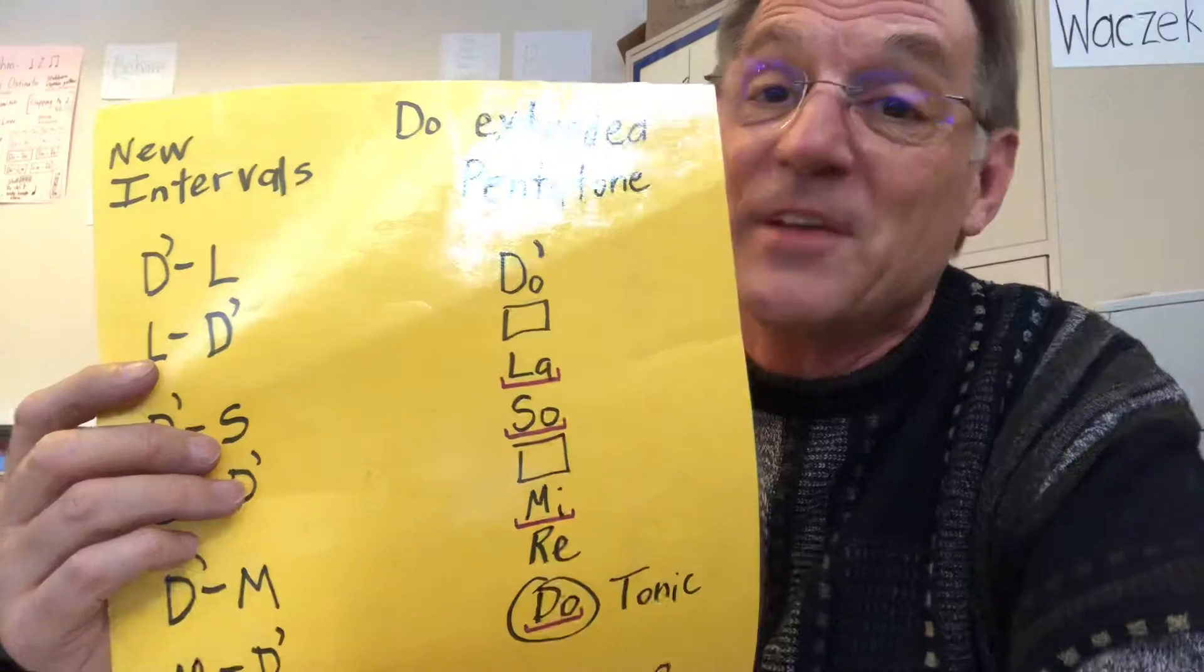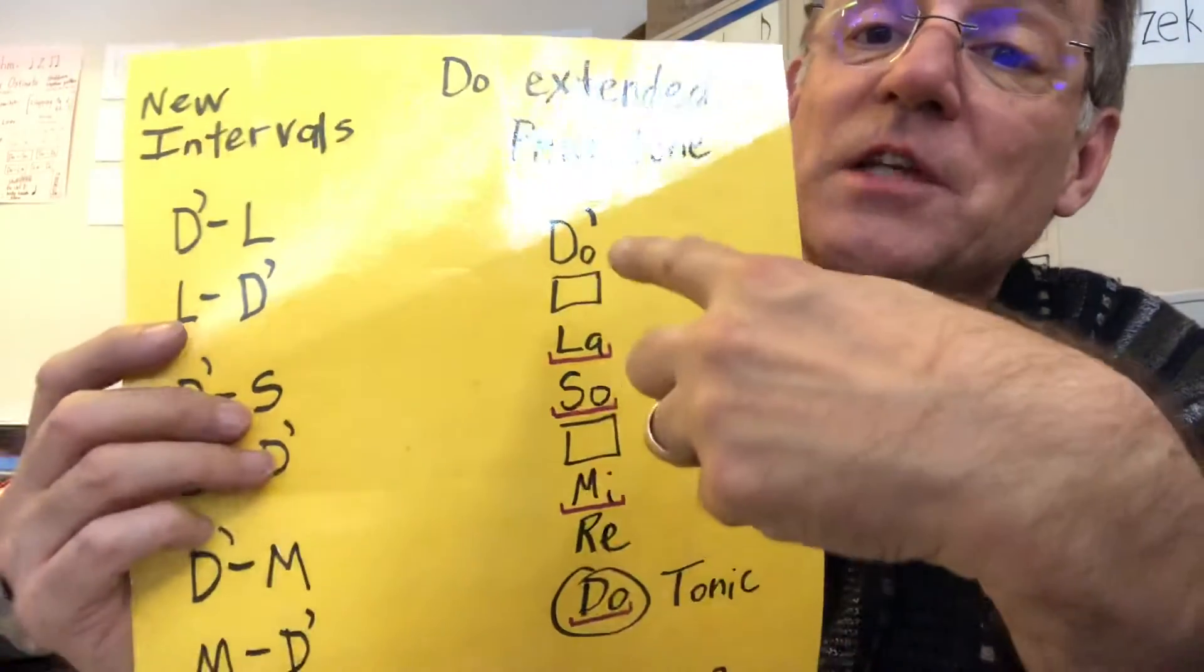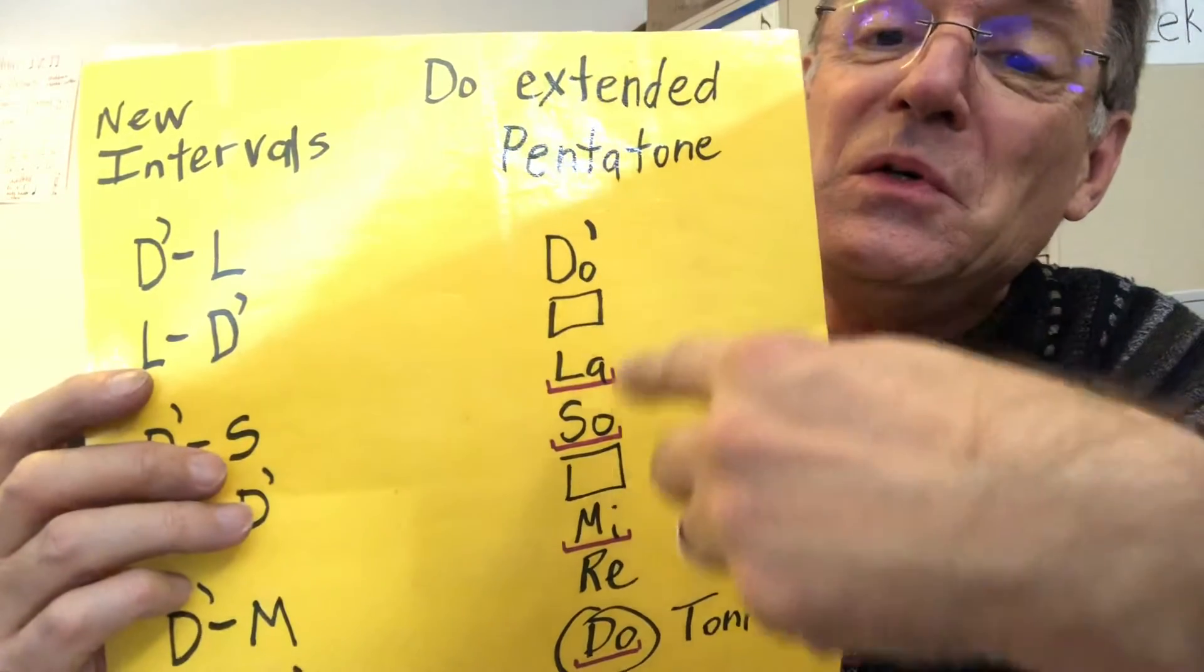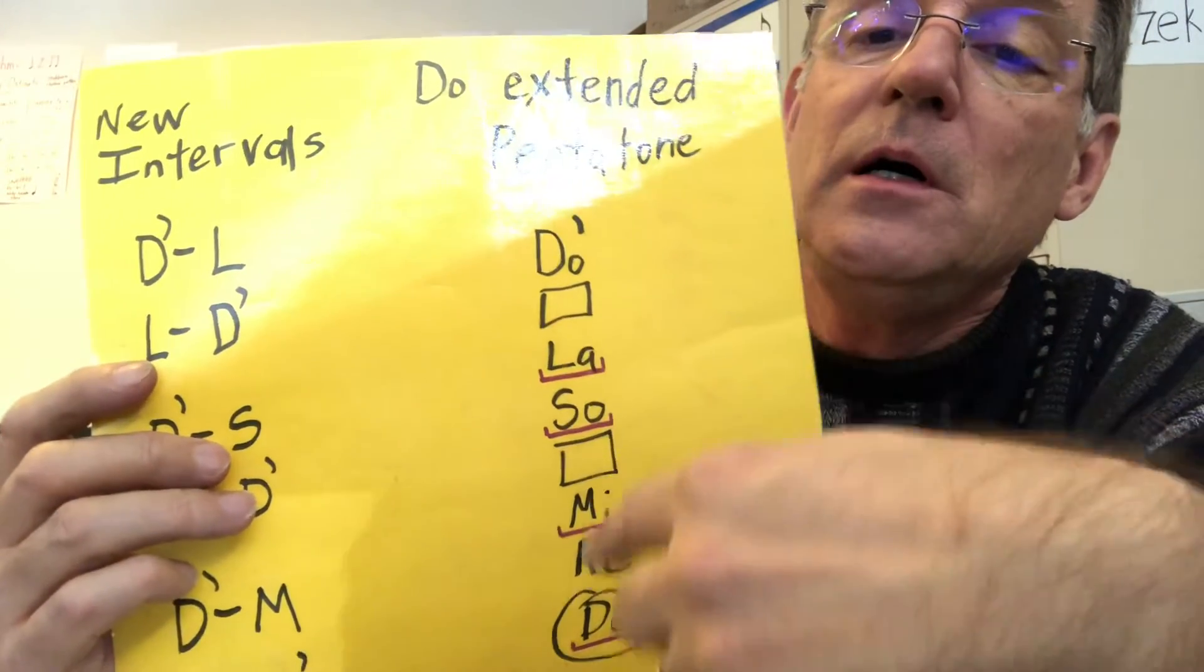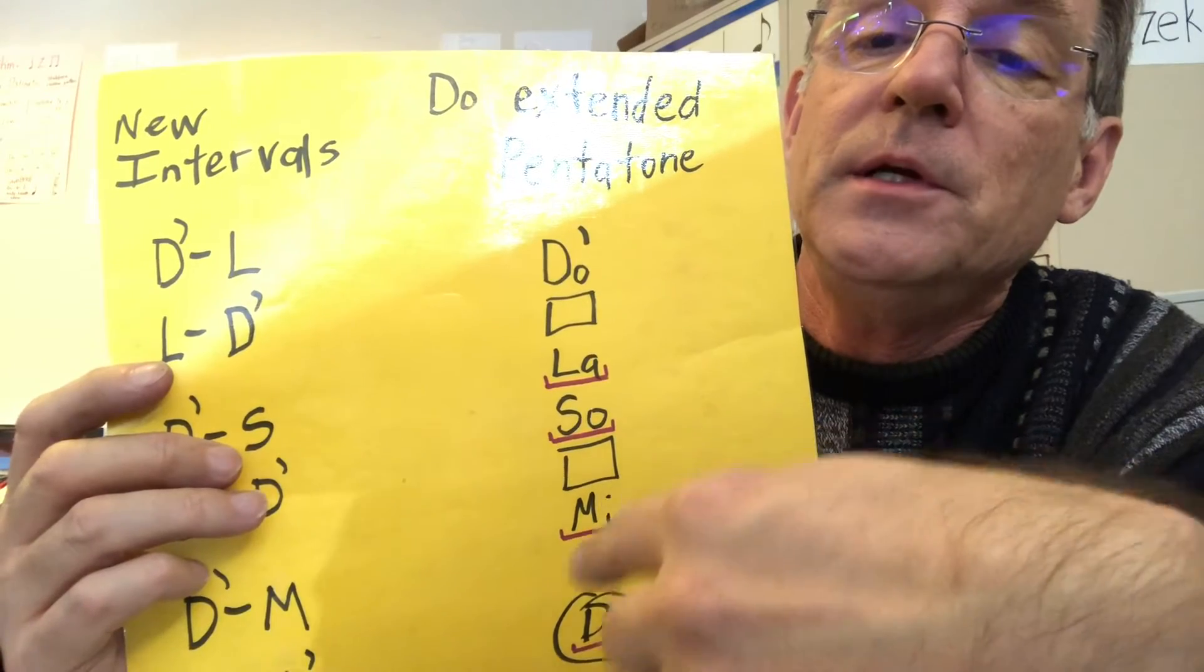Let's see if you can do that. If you can, rewind it and do it again. So now I'm going to do the whole phrase. I'll sing it. You sing it after me. Do, Sol, La, Mi, Sol, Re, Mi, Do.